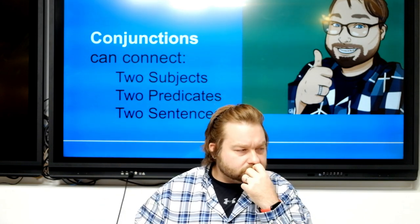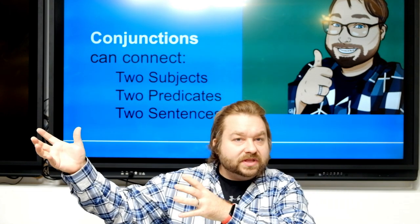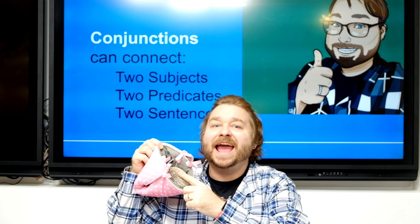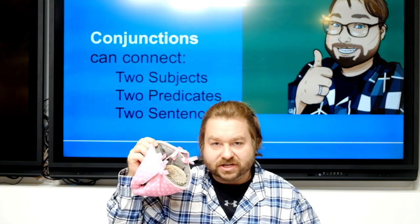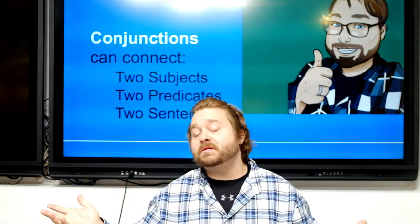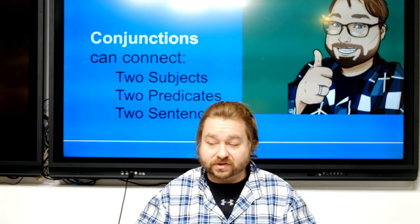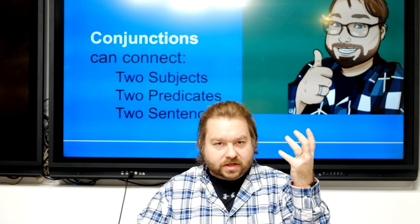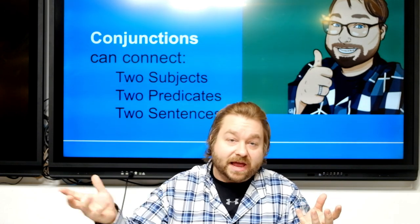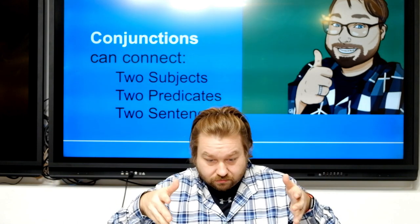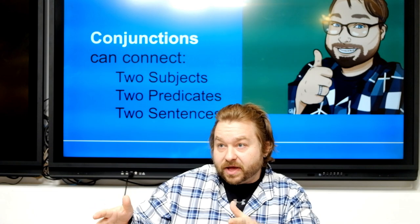What about two predicates? What if there are two things that happen to the subject? 'The hedgehog is angry and sleepy' — two things happen to a single subject. And two sentences? 'The hedgehog was angry' — that's a sentence. 'Ran into her bed' — that's a sentence. We can put them together with a conjunction.